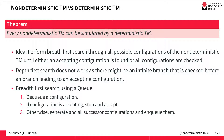An interesting question is how non-deterministic and deterministic Turing machines relate. We know for non-deterministic and deterministic finite automata that they accept the same class of languages — the regular languages — and this is actually the same for Turing machines. For every non-deterministic Turing machine we can simulate it using a deterministic one, by going through all possible configurations until we find an accepting configuration or exhaust all configurations.